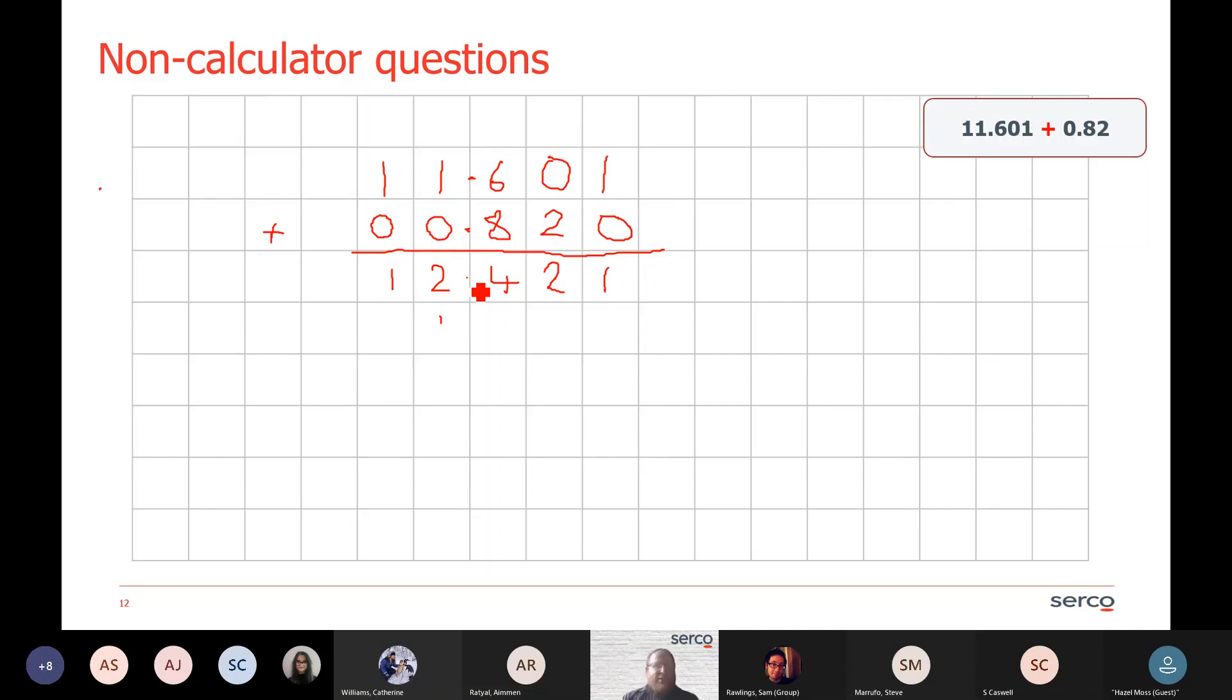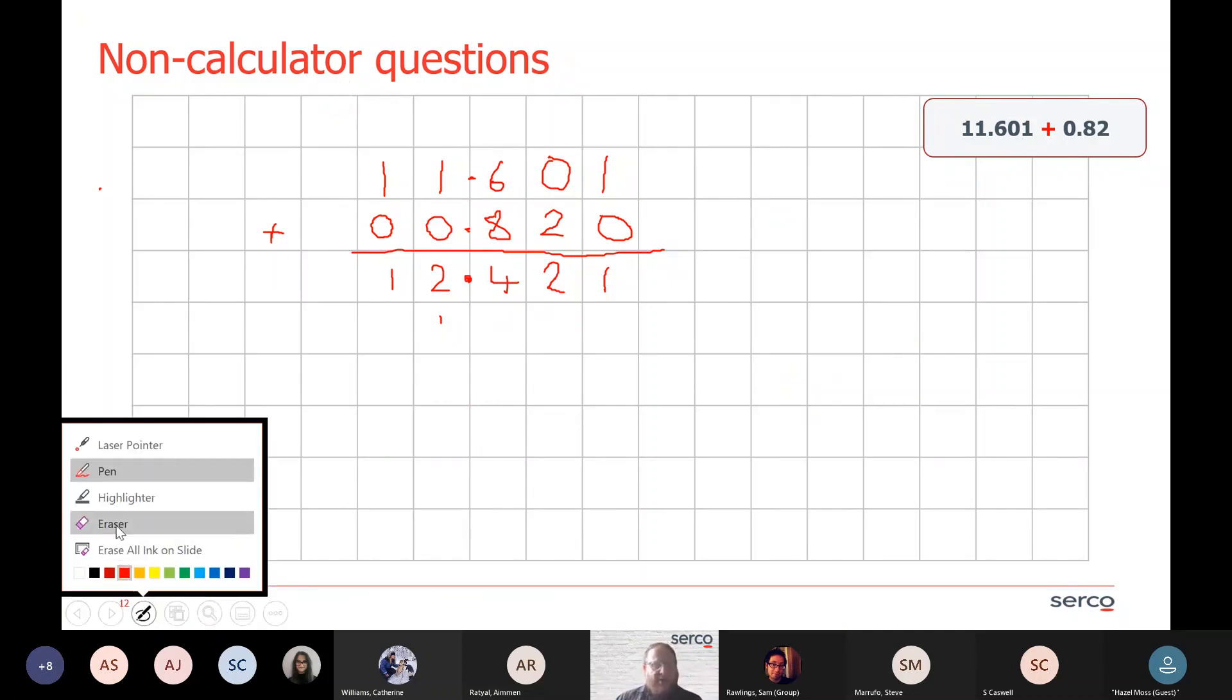When we're adding decimals, we could potentially take the decimal point out and put it back in afterwards. It makes no difference to our adding up. As long as we line things up properly, what is key is you put the decimal point wherever it is in the question, you also put it into the answer.